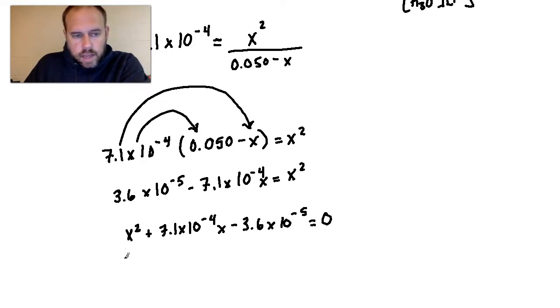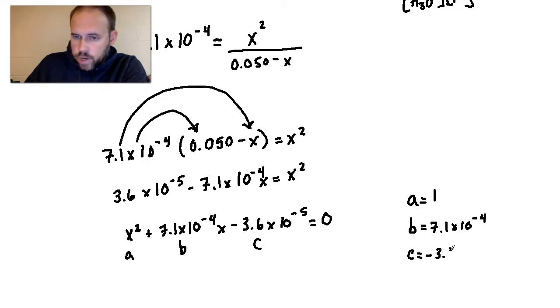So as far as the quadratic equation is concerned, you've got a, you've got b, and you've got c. Now a here is an implied one that is coming before this x squared, so keep that in mind. So when we go to the quadratic equation, a will be one. When we get to b in the quadratic equation, it would be a positive 7.1 times 10 to the negative fourth, and then when we get to c, it would be a negative 3.6 times 10 to the negative fifth.